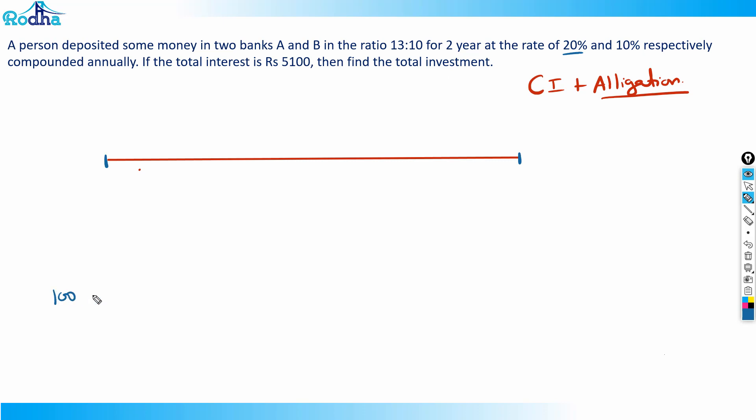At 20% for two years, the combined compound interest is 44%. I can use successive percentage change. Similarly, 10% for two years gives 21% combined interest. In compound interest compounded annually, the principal changes every year. After the first year, 120 is the new principal and 110 is the new principal. In the second year, the 20% increase is on 120 and 10% increase is on 110.